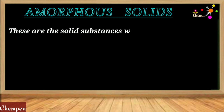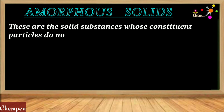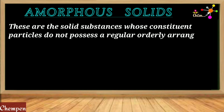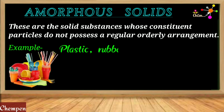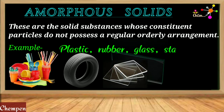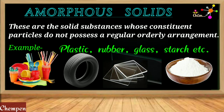On the other hand, amorphous solids are those solid substances whose constituent particles do not possess a regular orderly arrangement. In one case the particles are arranged in a definite pattern, whereas in the second case they do not have any regular arrangement. Examples are plastic, rubber, glass, starch, etc. All these solid substances possess an irregular arrangement of their constituent particles.